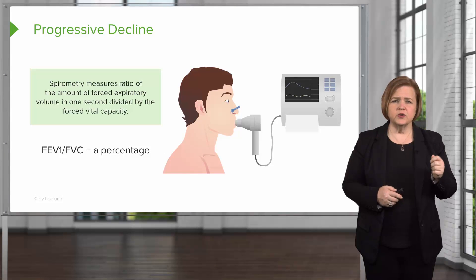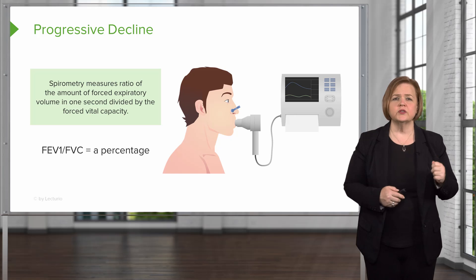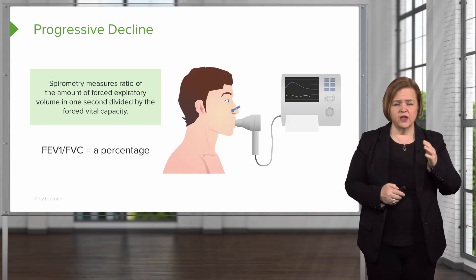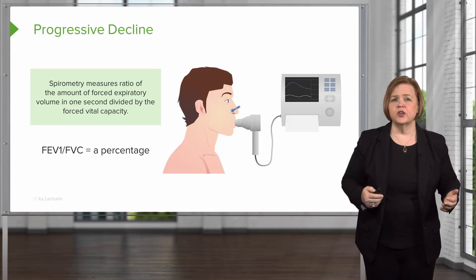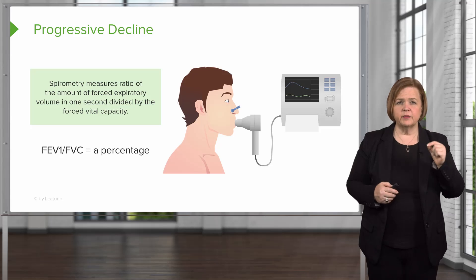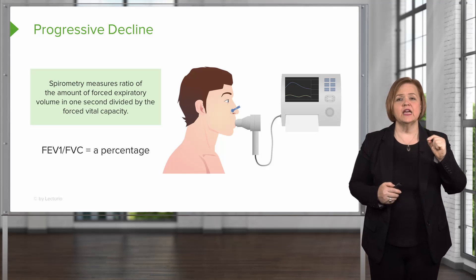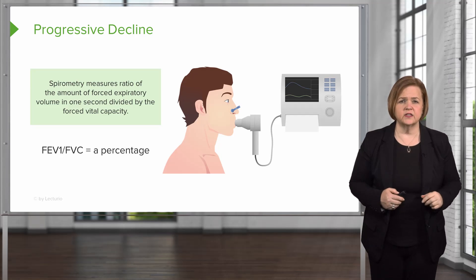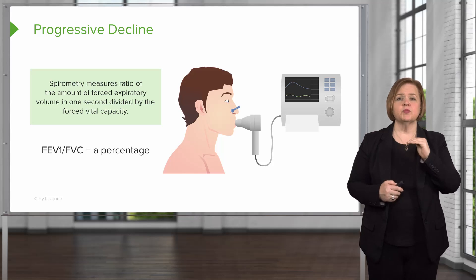Now spirometry measures the ratio of the amount of forced expiratory volume in one second and forced vital capacity. So you divide the forced expiratory volume by the forced vital capacity — that'll give us a percentage. That percentage number is what we're looking at in a pulmonary function test to give us an indication of the patient's overall status. FEV1 divided by FVC gives us that percentage.